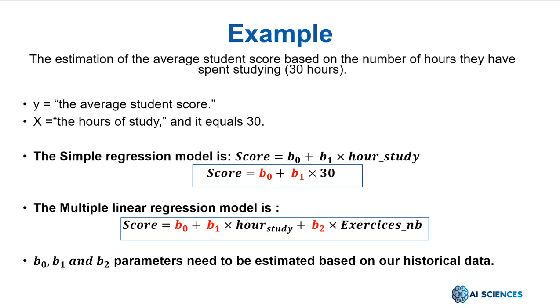If we add the number of exercises that the student has completed to the model, it will become a multiple linear regression model: Score equals b0 plus b1 times hour study plus b2 times exercises nb plus. For the prediction of the score, we need to estimate three parameters: b0, b1, and b2. b0, b1, and b2 parameters need to be estimated based on our historical data.